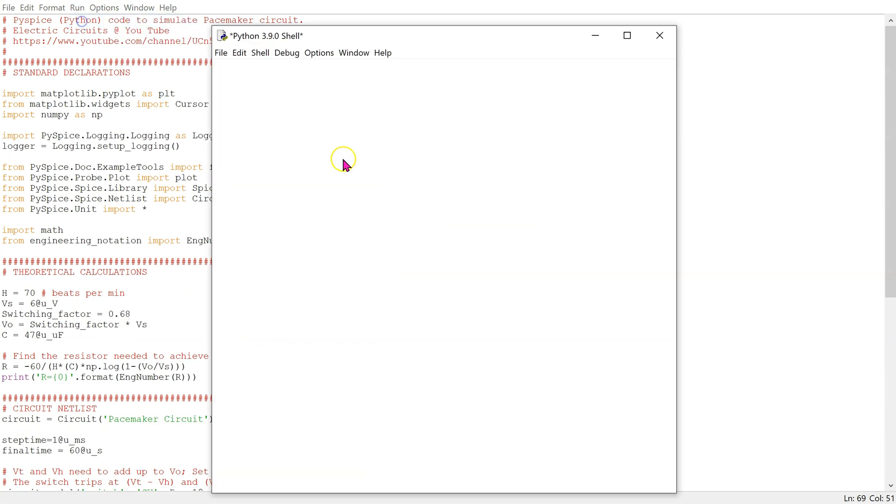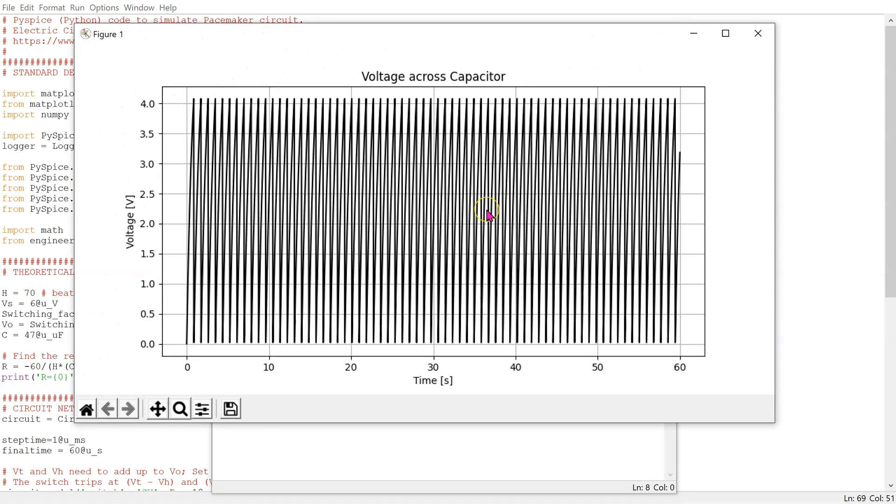When we run this code, we obtain the voltage across the capacitor and again it can be verified that this corresponds to 70 beats per minute.